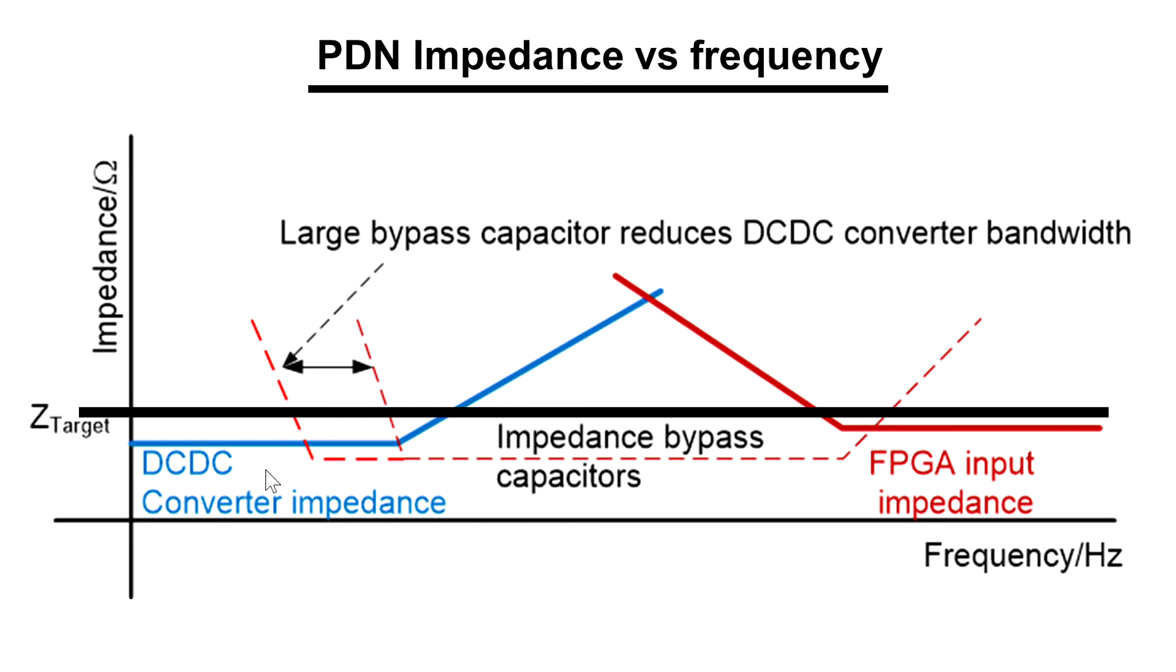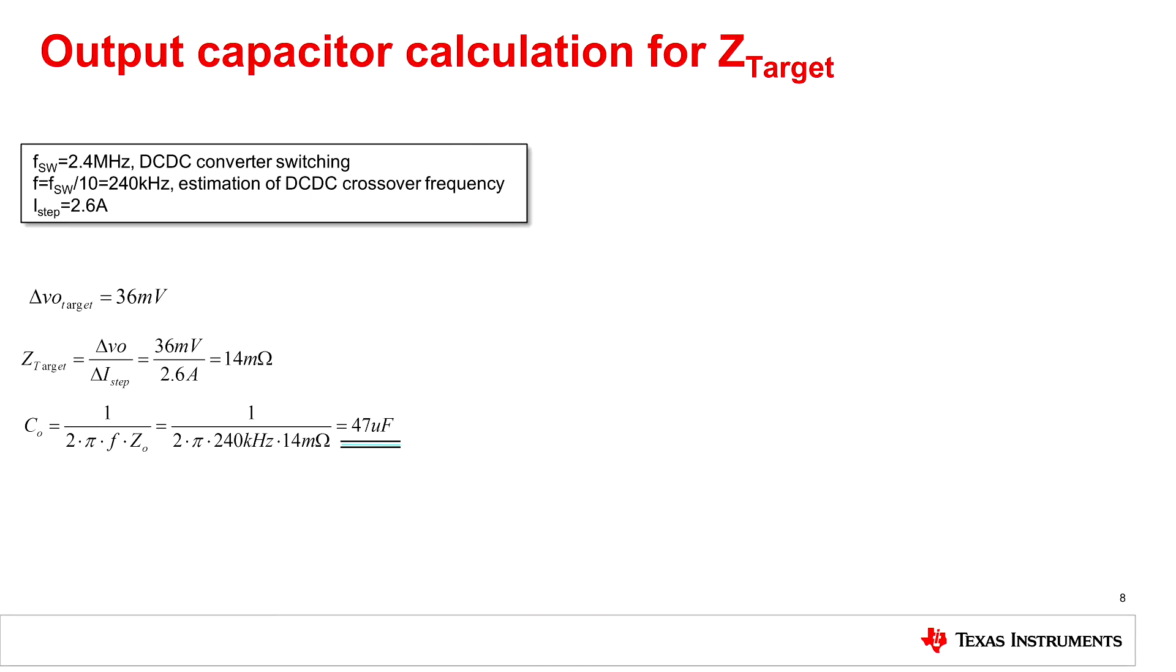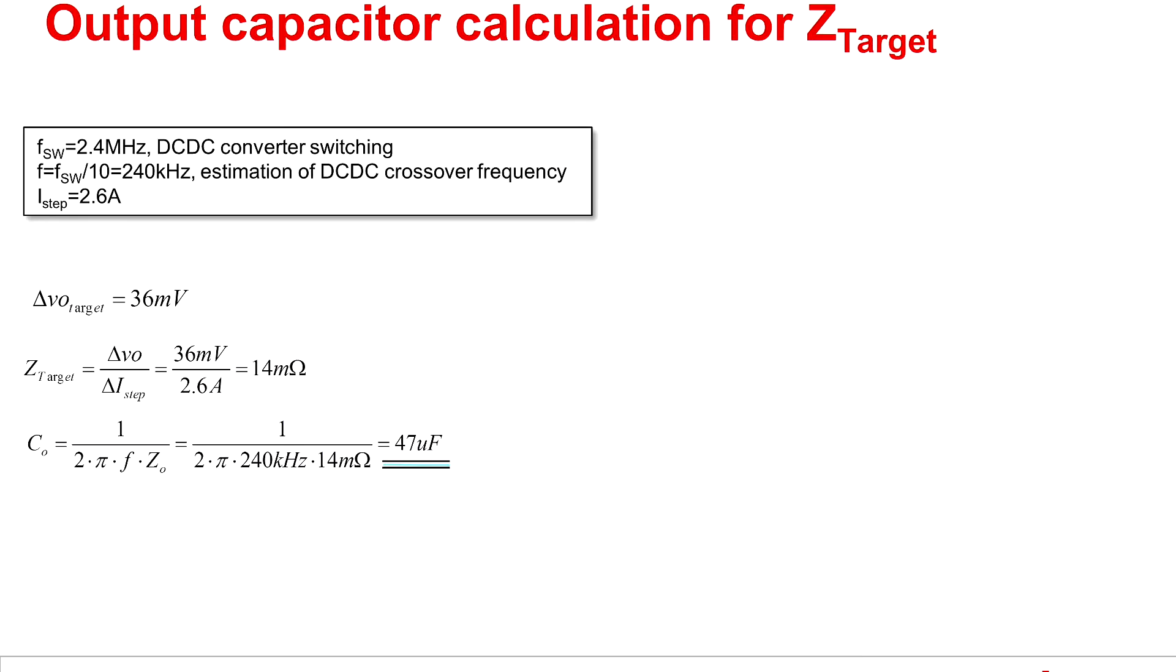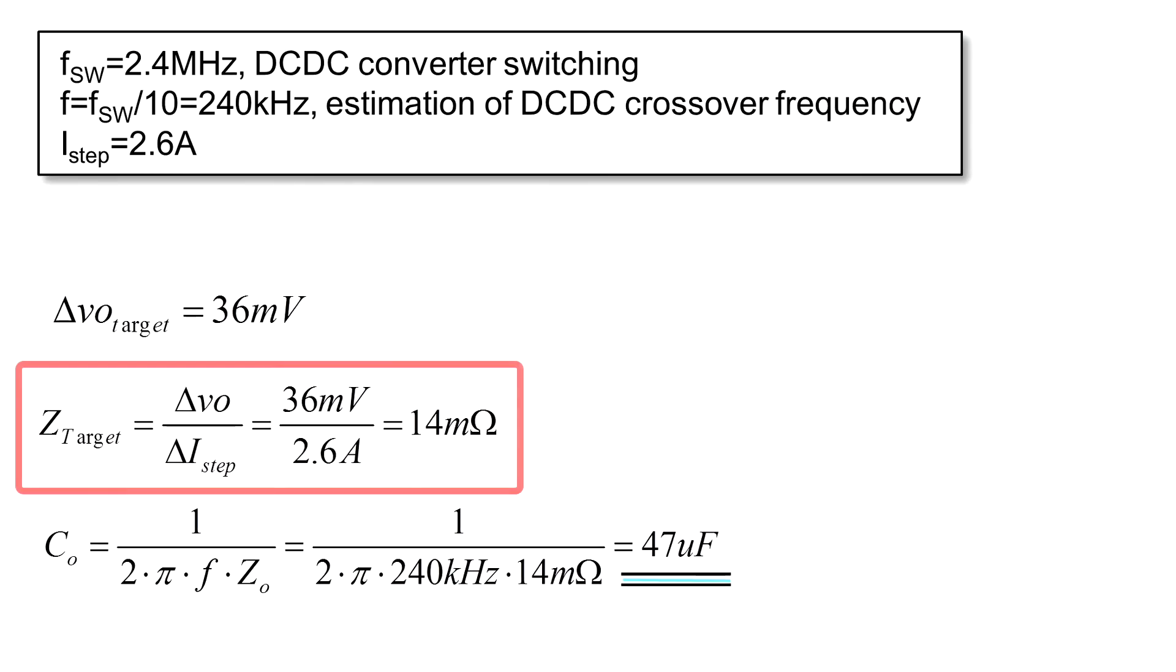So for low frequencies the DC-DC converter dominates the impedance and beyond its crossover frequency we require an output capacitor plus some high frequency decoupling and bypass capacitors to maintain a flat impedance. Now we can calculate our target impedance. For that we use this formula where we take our load drop divided by the load step and we get 14mΩ for our target impedance.